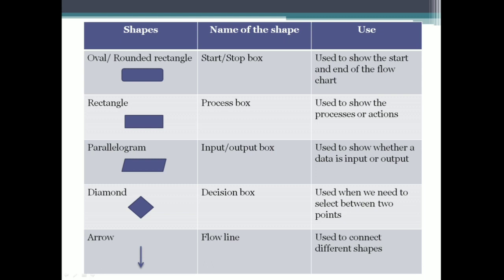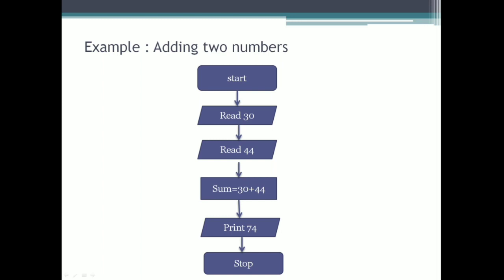The fourth shape is diamond, which is a decision box. It is used when we need to select between 2 options, and commonly it is used in the case of yes or no. Finally, we have the arrow. The flow of lines can be represented using arrows, which connect each of the shapes. It is used to connect different shapes in a flowchart and also indicates the direction of the flow.